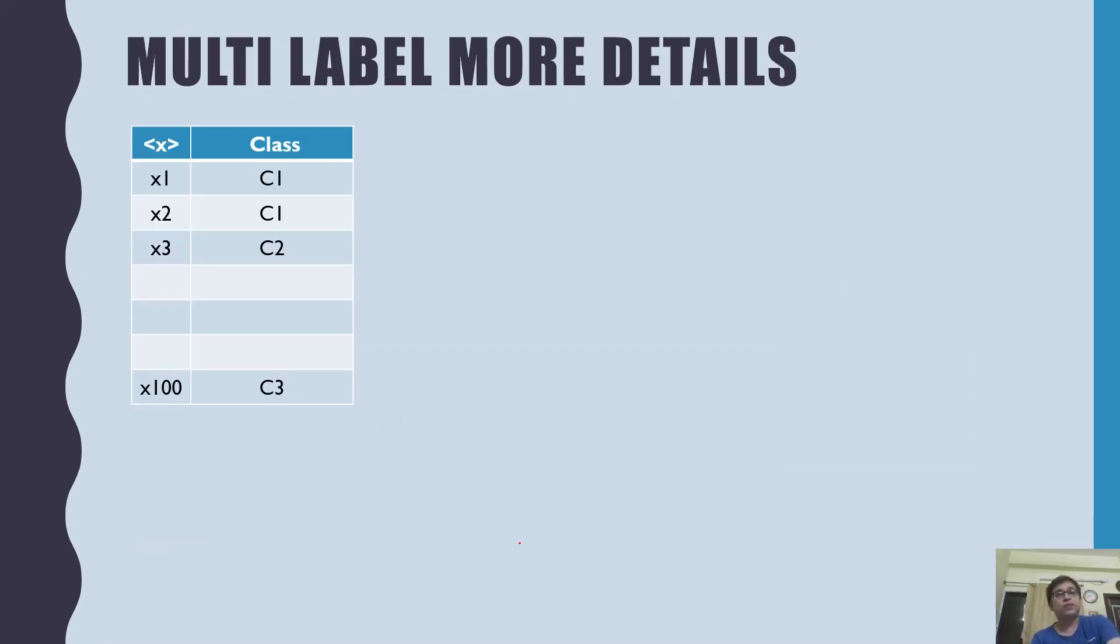In a normal classification task, we have a dataset like this. However, in multi-label classification, my dataset would look like something like this. One simple strategy to use a classifier is a probabilistic classifier.